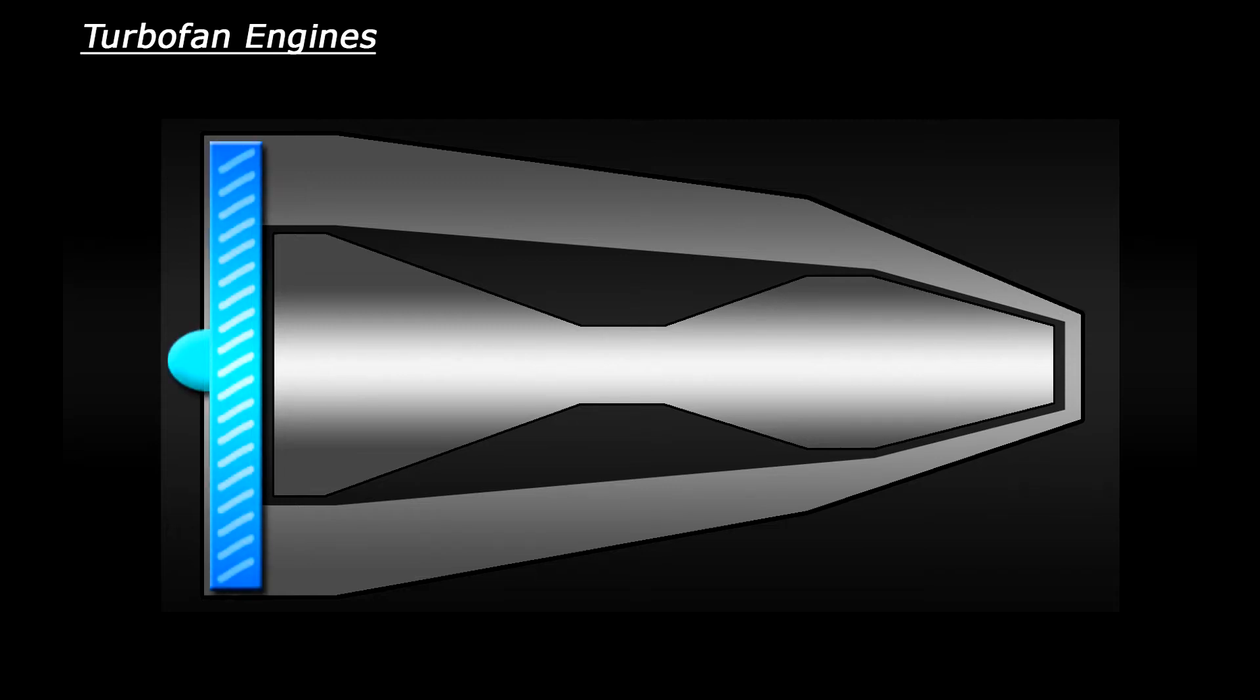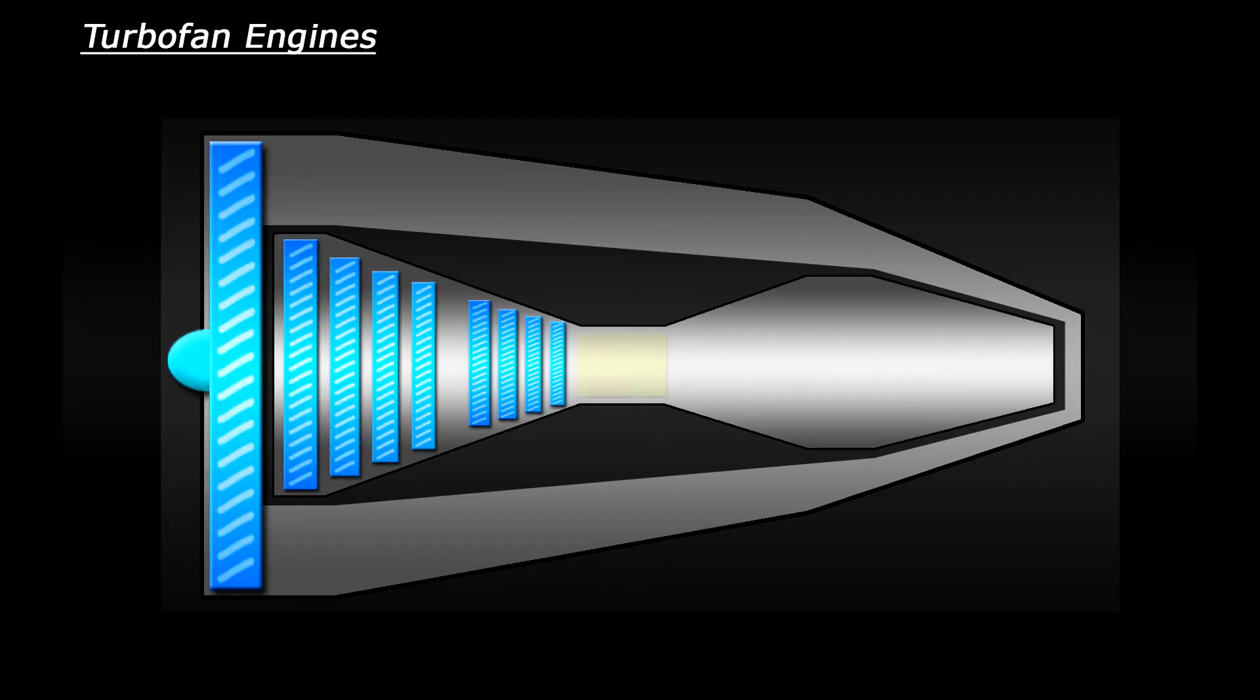You have an intake fan, a compressor, combustion chamber, turbine and exhaust. One of the differences is that this type of engine has two compressors and two turbines.